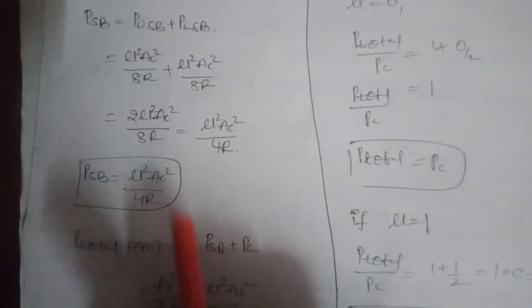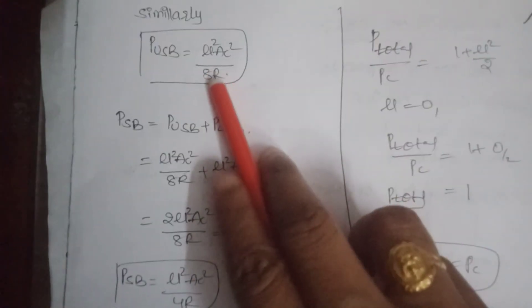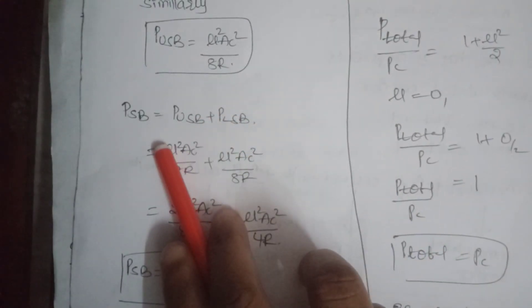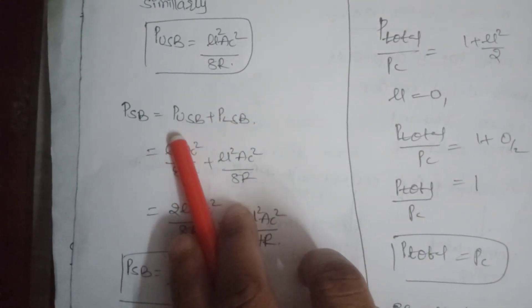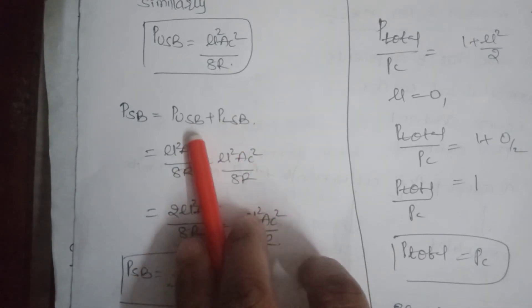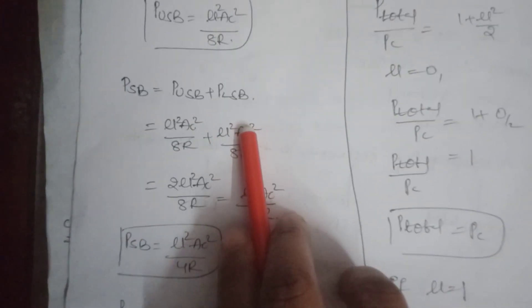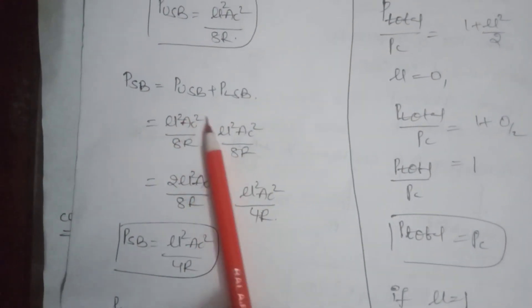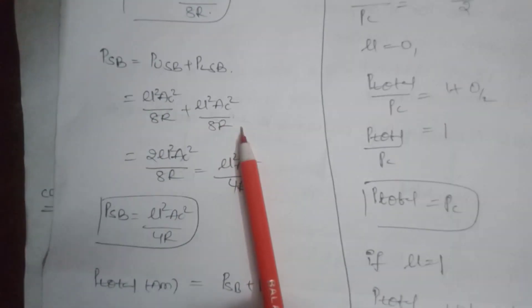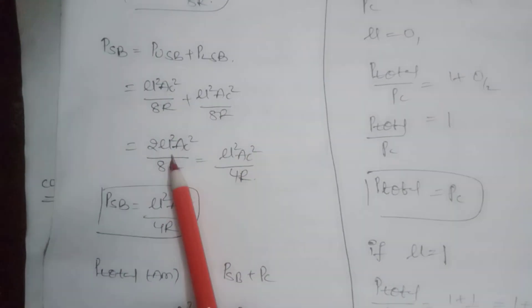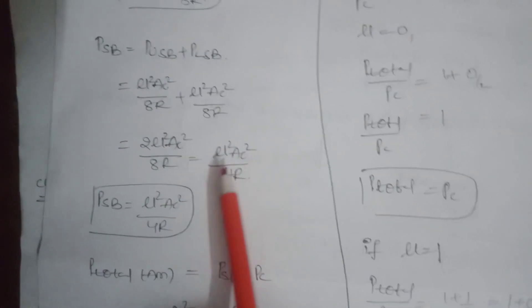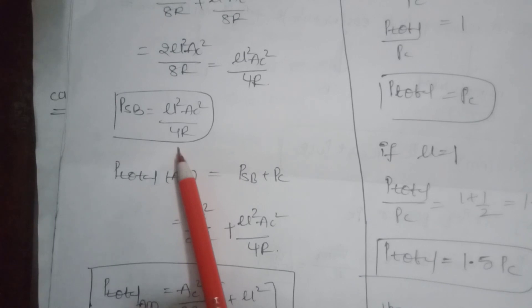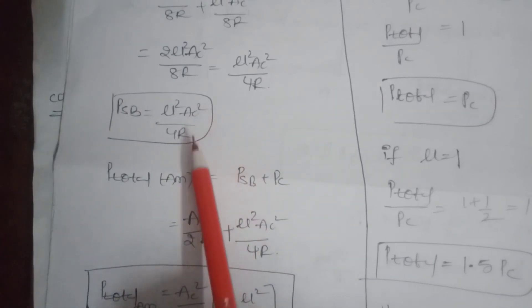Similarly, power consumed by the upper sideband is also μ²·AC²/(8R). So total sideband power equals P_USB + P_LSB = μ²·AC²/(8R) + μ²·AC²/(8R) = 2·μ²·AC²/(8R) = μ²·AC²/(4R).